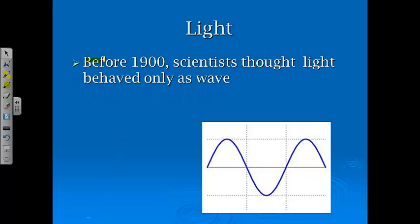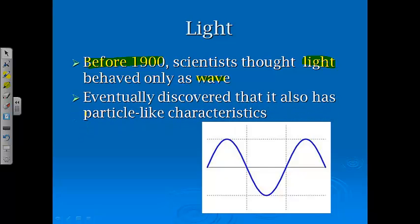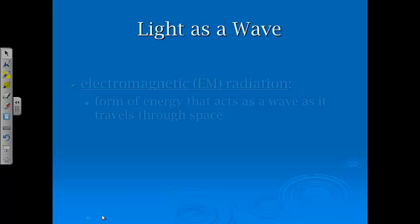Now, before 1900, most scientists thought light behaved as a wave, and down here you have a wave-like property with a repeating pattern. Eventually what happened is that we really had to start treating light like it also had particle-like characteristics. The best way that I know for that to make sense is to think of this wave as being made of all these little particles. So it still may have some properties of a wave, but it also has some particle-like characteristics.